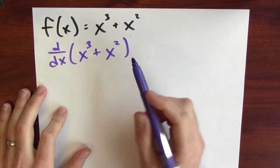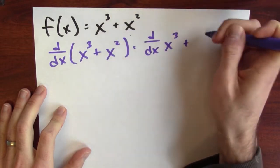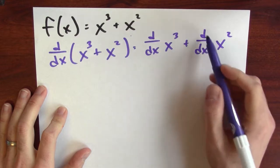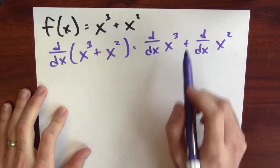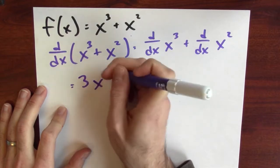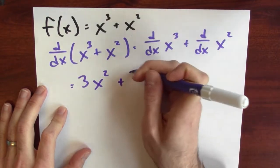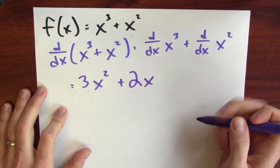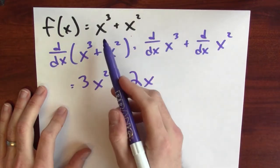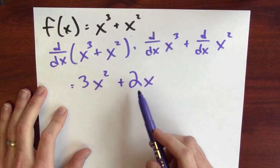This is a derivative of a sum, which is the sum of derivatives. We have to figure out the derivative of x cubed and the derivative of x squared — that's the power law. The derivative of x cubed is 3x squared, and the derivative of x squared is 2x. There are no more d/dx's — we've calculated the derivative. The derivative of x cubed plus x squared is 3x squared plus 2x.